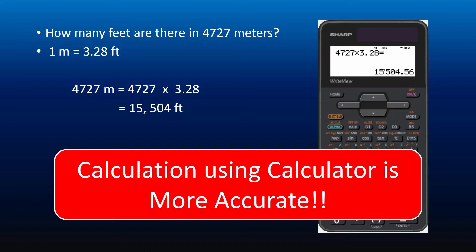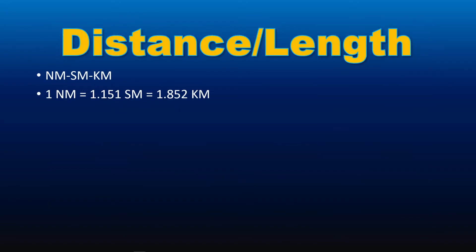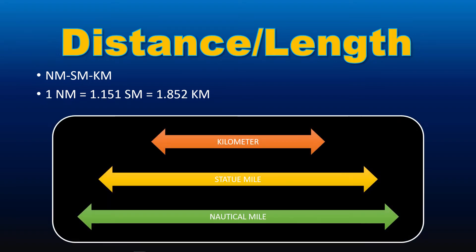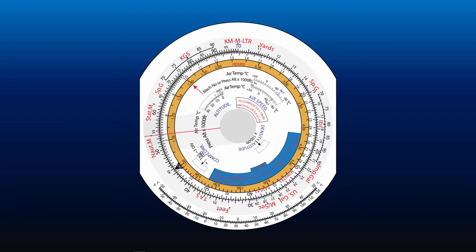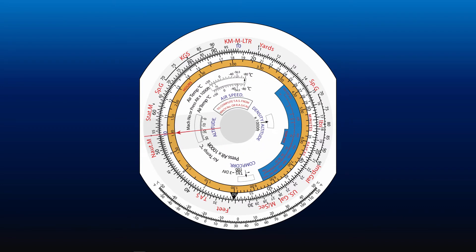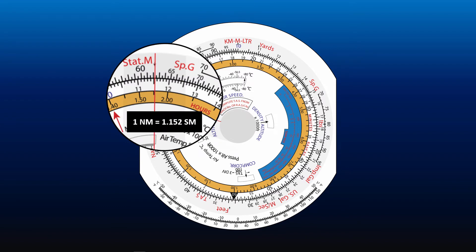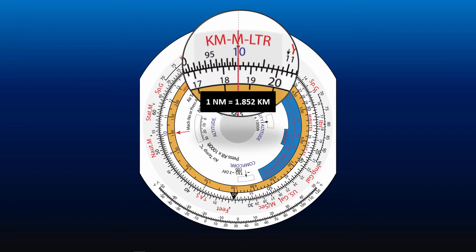Now let's look at the conversion between nautical mile, statute mile, and kilometer. The conversion factors between these units: 1 nautical mile equals 1.151 statute miles equals 1.852 kilometers. We can use CRP5 to assist in memorizing these factors. To do this, align the cursor with the nautical mile marker marked as naut.m, then align 10 on the inner scale with the cursor — this represents 1 nautical mile. Read off the conversion factors opposite the stat.m and km markers: 1 nautical mile equals 1.152 statute miles and 1.852 kilometers.